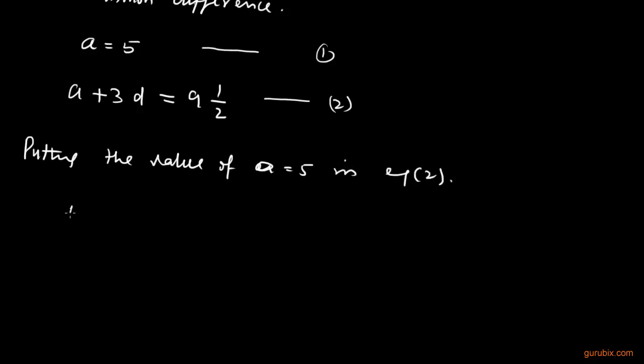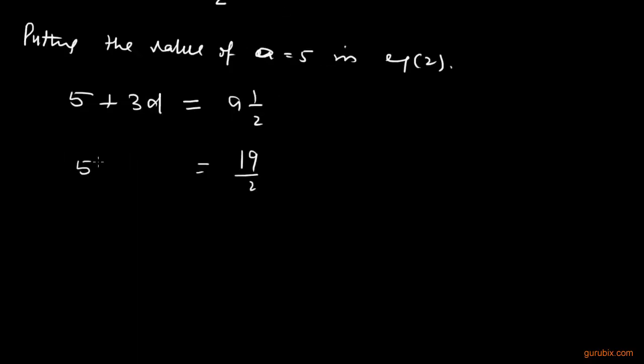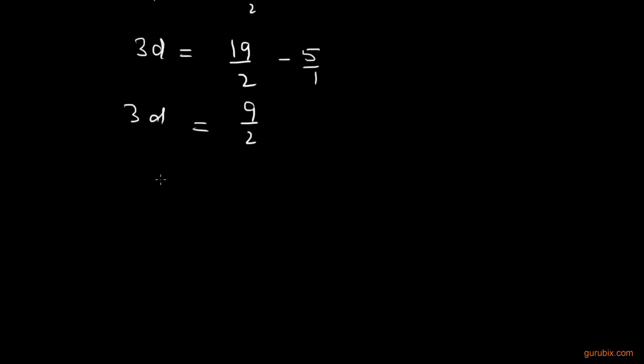So what we get, we get 5 plus 3d equals to 9½. Now we can write this 9½ as 19 over 2. This is equal to 5 plus 3d and what we get: 3d equals to 19 over 2 minus 5 and this equals to 9 over 2. Therefore 3d equals to 9 over 2, this means d is equal to 3 over 2.